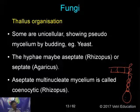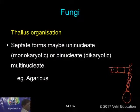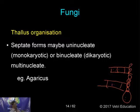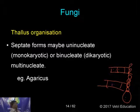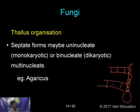Septate forms may be uninucleate — having one nucleus (monokaryotic) — or sometimes having two nuclei, that is, a binucleate or dikaryotic condition, formed due to the fusion of two different hyphae. Dikaryotic condition is found in higher fungi, and monokaryotic in lower fungi. Both monokaryotic and dikaryotic mycelia are found in Agaricus.